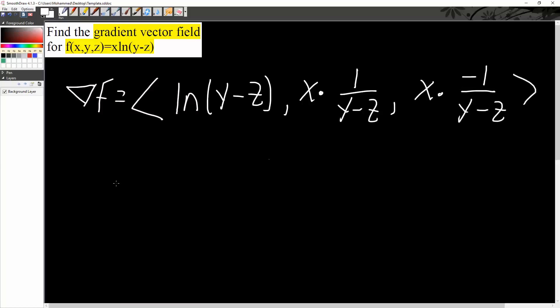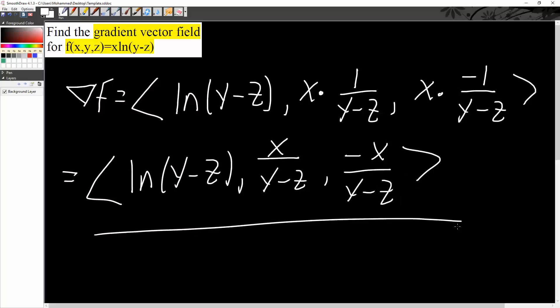And just to make it clear, we can write it like this. So ln(y minus z), comma x divided by y minus z, comma negative x divided by y minus z. And this is our final answer. And that's all we need to do.